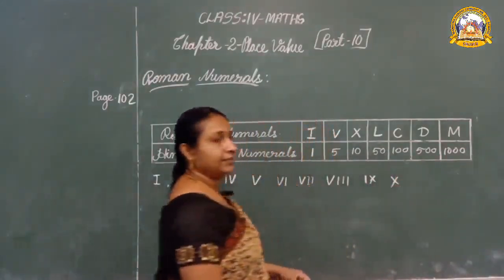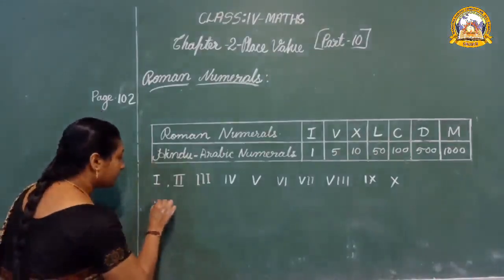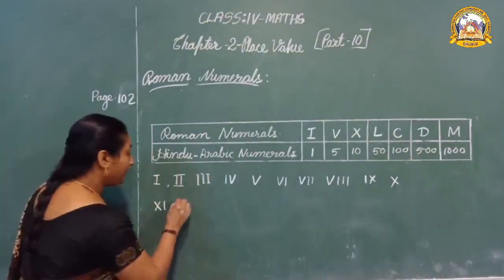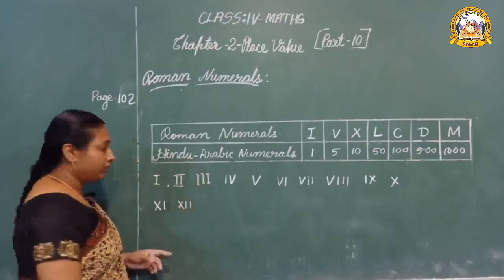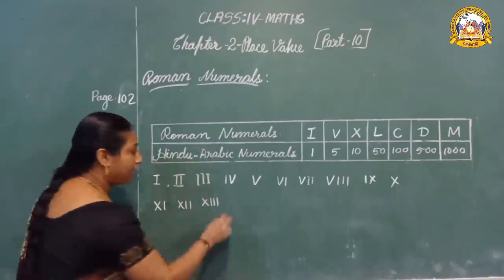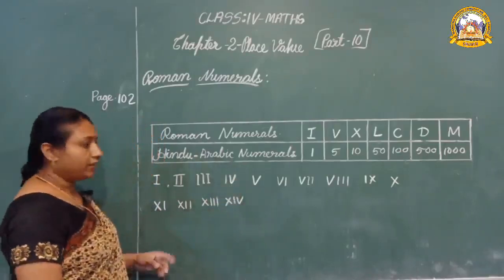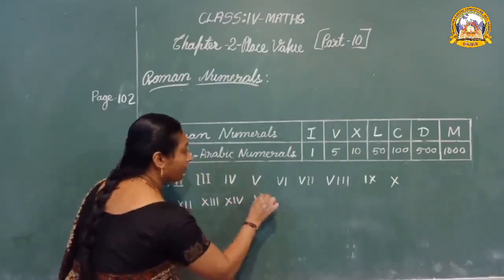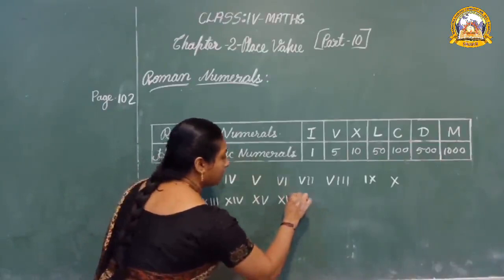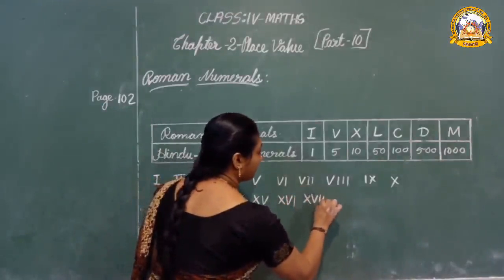Ten is X. Then eleven means ten plus one — XI. Ten plus two is twelve — XII. Ten plus three is thirteen — XIII. Ten plus four is fourteen — XIV. Ten plus five is fifteen — XV. Ten plus six is sixteen — XVI. Ten plus seven is seventeen — XVII. Then ten plus eight is eighteen — XVIII.